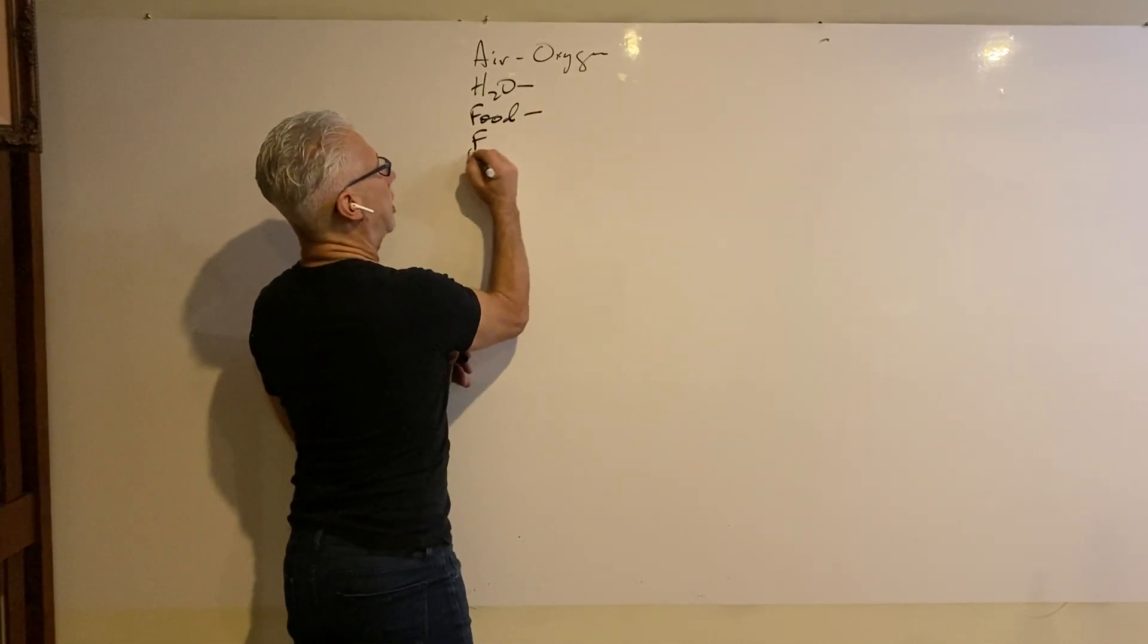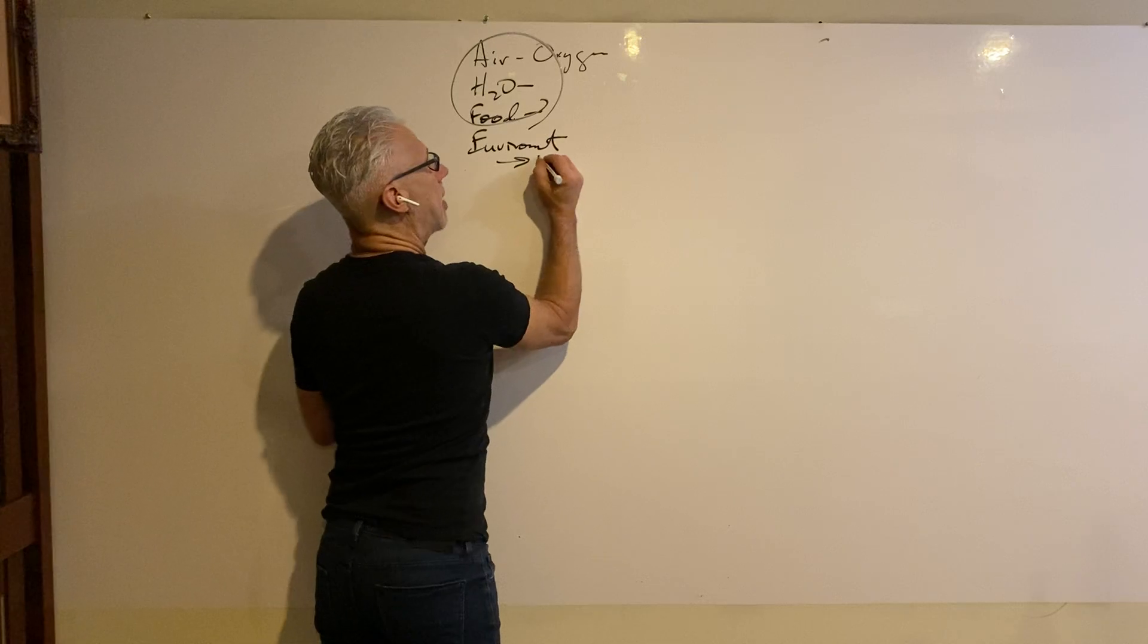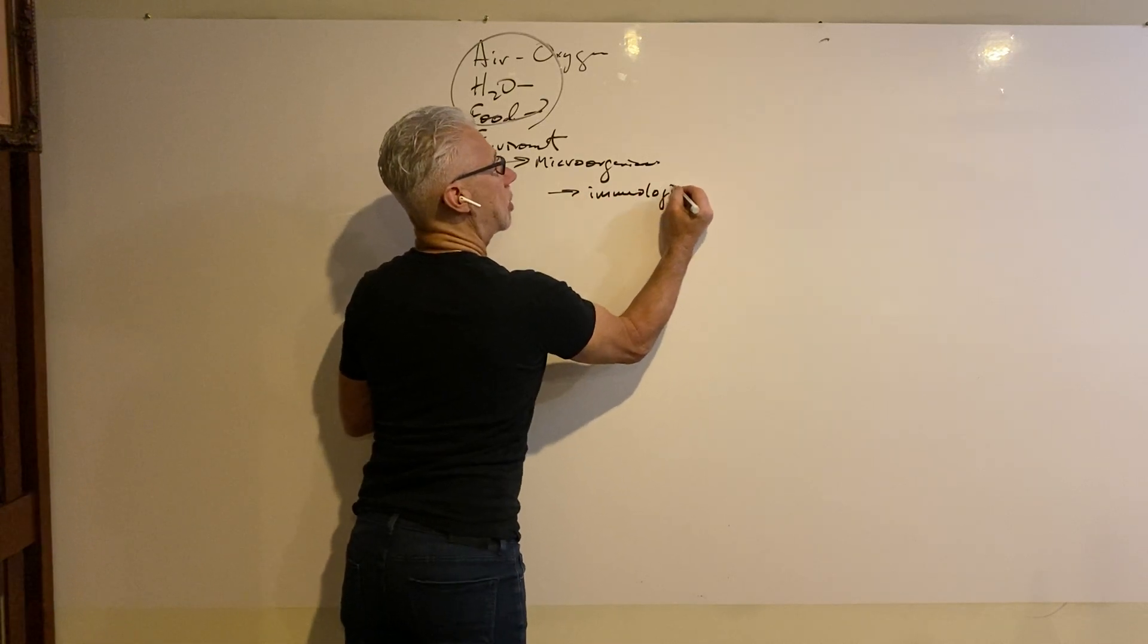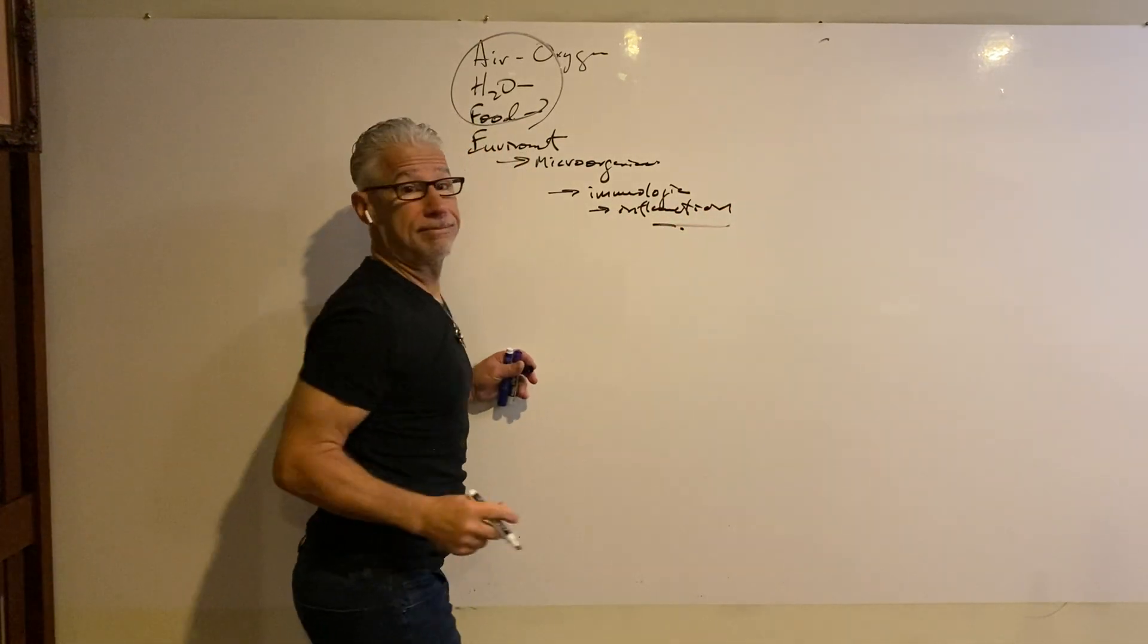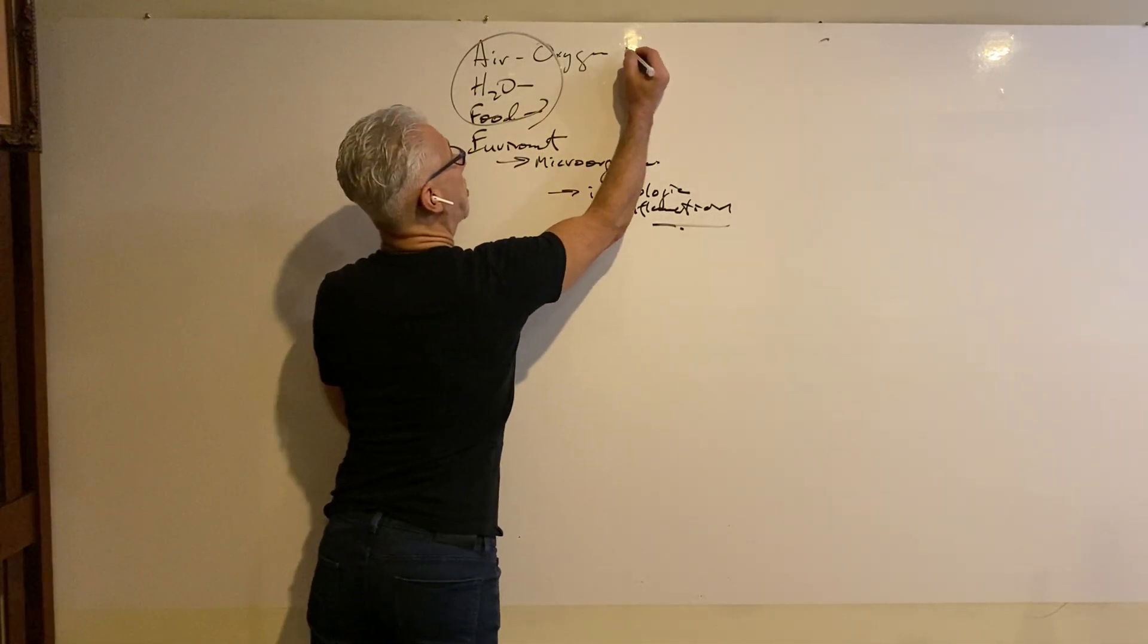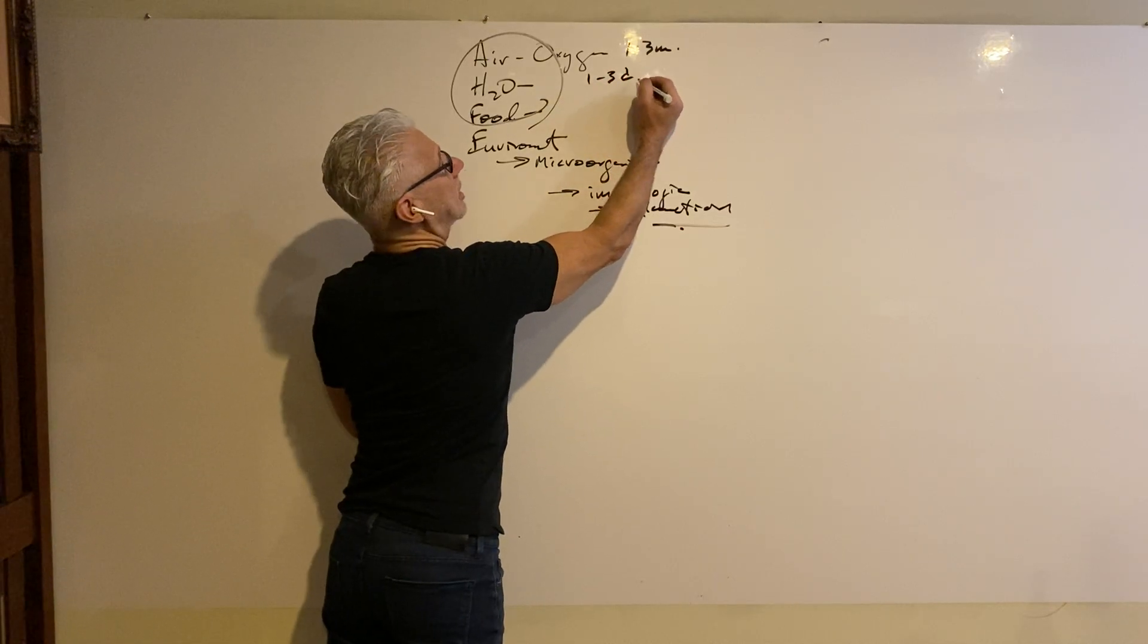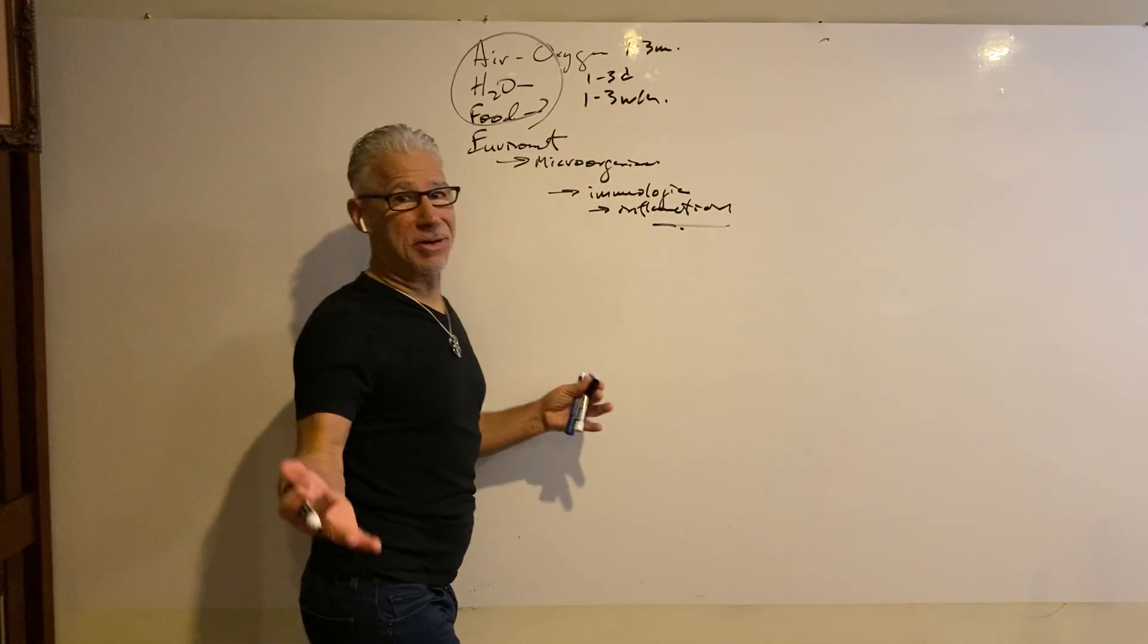Now, the environment of all of this also brings in microorganisms, which elicit an immunologic reaction called inflammation. What do we know about inflammation? This is the simple part. We know we're all breathing. You can go maybe one to three minutes without air, you can go one to three days without water, and one to three weeks without food. Amazing.